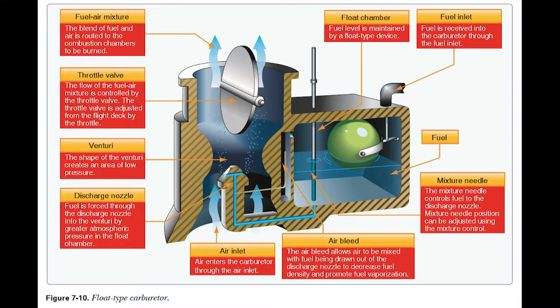The fuel sprays out into that low-pressure air and mixes very effectively because of the low pressure. Then it goes through the throttle, which is just a little flat valve — when it's vertical, it lets the air pass by; when you turn it horizontal, it blocks off the flow of air through the carburetor.